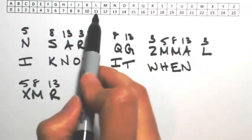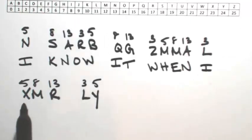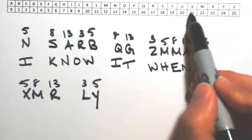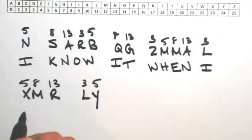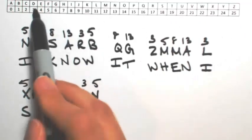L was shifted by 3, so 11 minus 3 is 8. So I know it when I, let's see what the rest is. X was shifted by 5, so back it up 5, so S. M was shifted by 8, so 12 minus 8 is 4, giving me an E.